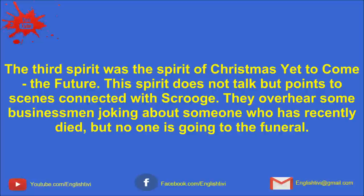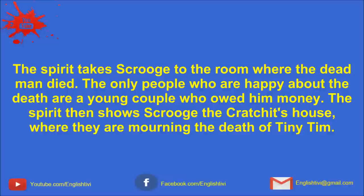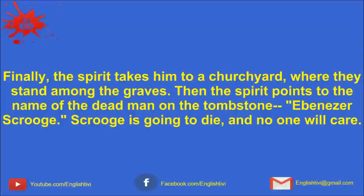Scrooge sees that he no longer occupies his usual place of business. The spirit then shows him two women who have stolen the bedclothes, curtains and clothes off the dead man and taken them to a pawnbroker. The spirit takes Scrooge to the room where the dead man died. The only people who are happy about the death are a young couple who owed him money. The spirit then shows Scrooge the Cratchit's house where they're mourning the death of Tiny Tim. Finally, the spirit takes him to a churchyard where they stand among the graves. Then the spirit points to the name of the dead man on the tombstone: Ebenezer Scrooge.